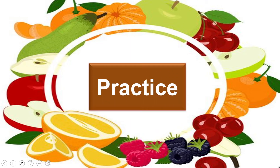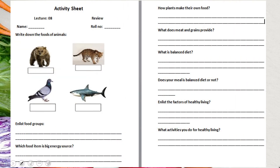Now let's move forward towards practice. You can download the assessment worksheet from the description box below this video or get a printed form from your teacher. On the activity sheet for lecture eight, write your name and class. Then identify what different animals eat from their pictures, enlist the five food groups and their names, and identify which food group is the biggest energy source — the ones containing carbohydrates.